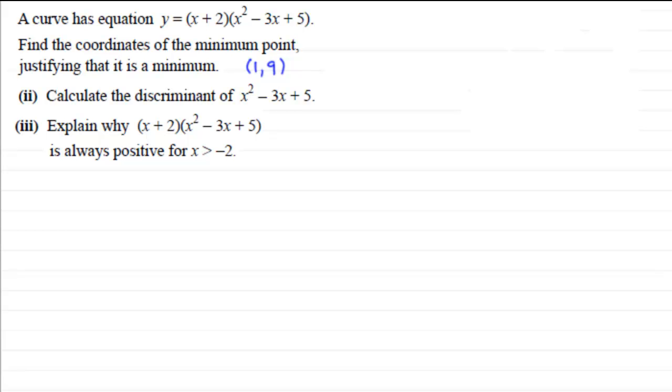If you'd like to have a go at this problem, if you haven't done it already, just give you a moment to pause the video, come back when you're ready. Welcome back. So first of all, we've got to calculate the discriminant of x squared minus 3x plus 5.